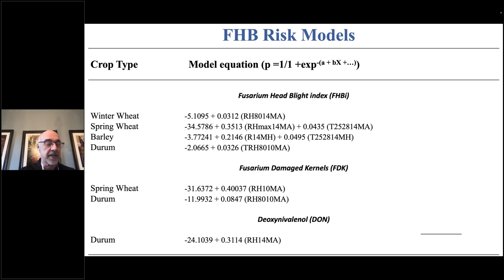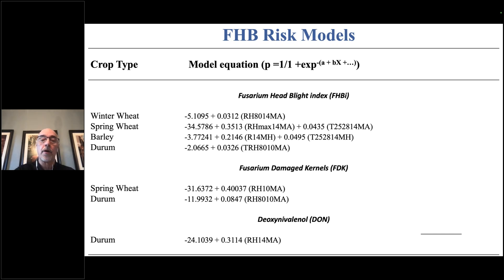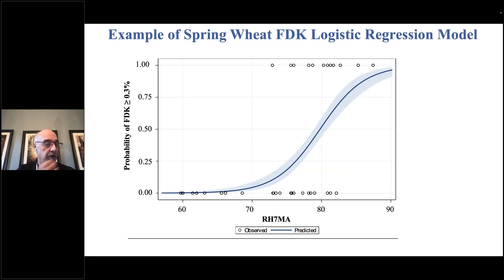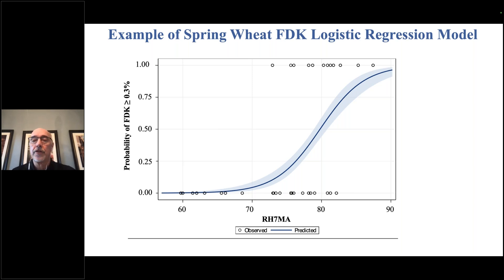We tested over 80 parameters and looked statistically for which ones gave us the most accuracy compared to what we observed in the field. The models also make physical sense: more hours with relative humidity over 80% means higher risk. They're statistically robust and physically reflect what we'd expect to see. The tool uses a technique called logistic regression. In logistic regression you have to define something called an epidemic.